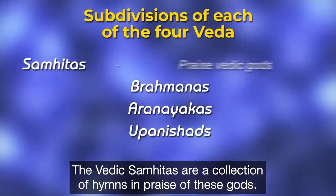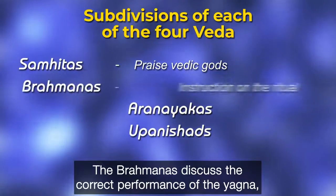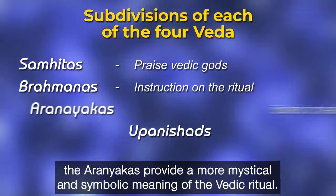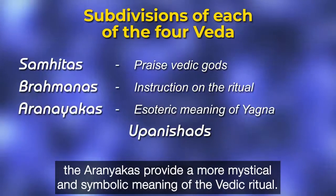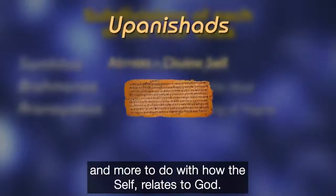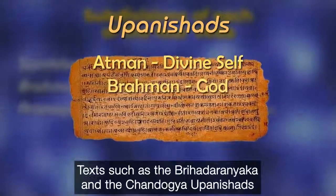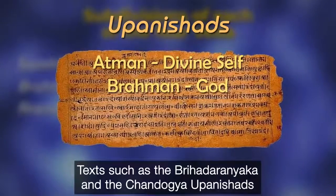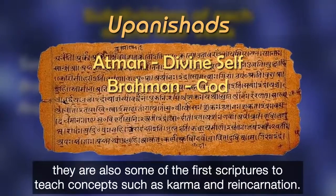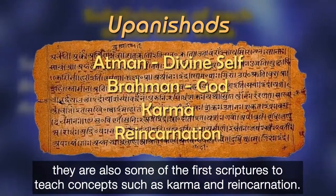The Vedic Samhitas are a collection of hymns in praise of these gods. The Brahmanas discuss the correct performance of the Yagya with stories and meditations. The Aranyakas provide a more mystical and symbolic meaning of the Vedic ritual. The Upanishads, however, are less to do with ritual and more to do with how the self relates to God. Texts such as the Brihadaranyaka and the Chandogya Upanishads are perhaps the first scriptures in the world to discuss these principles, and are also some of the first to teach concepts such as karma and reincarnation.